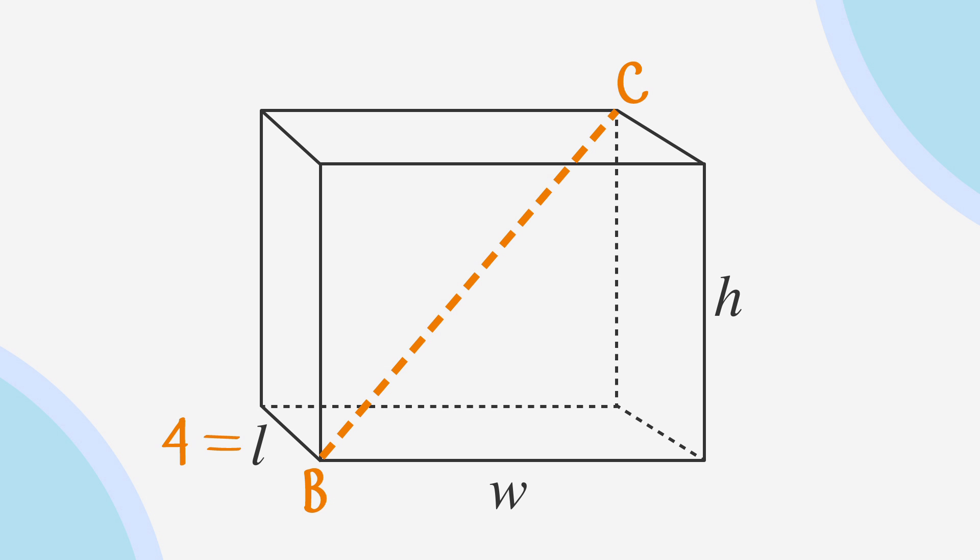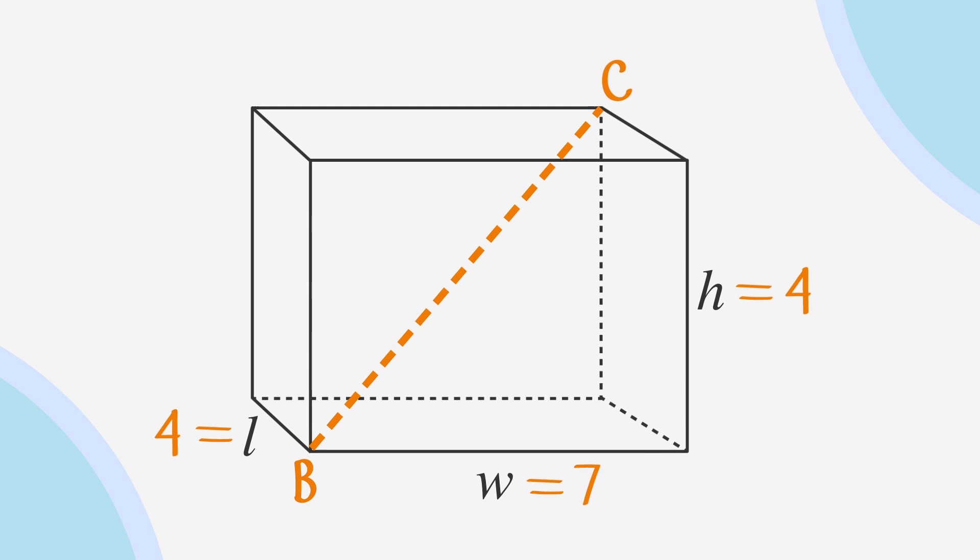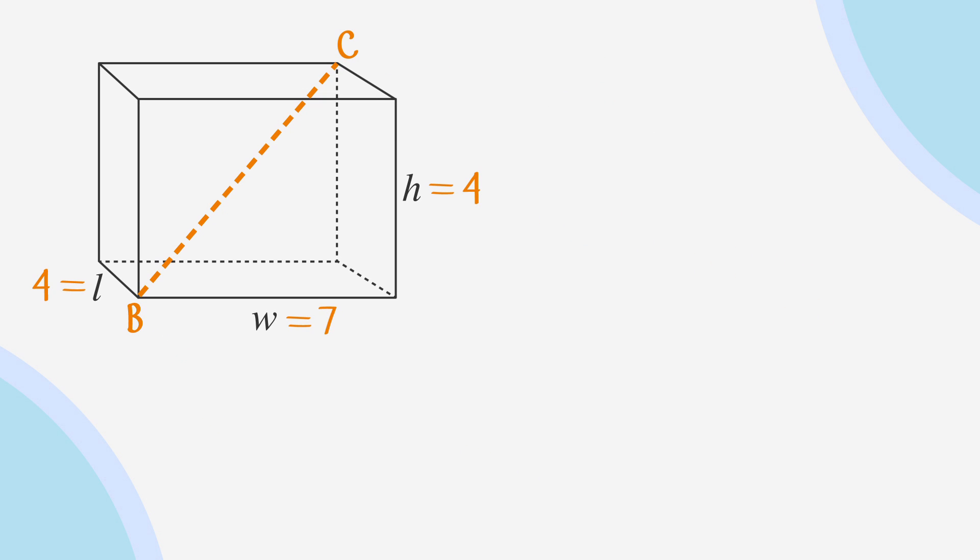We're given a length of 4, a width of 7, and a height of 4. Let's label our length, width, and height because the formula for volume is length times width times height.